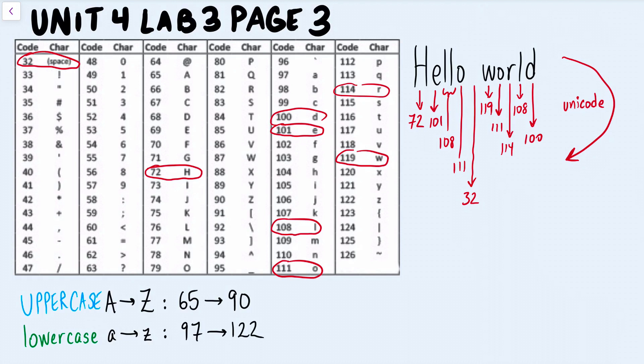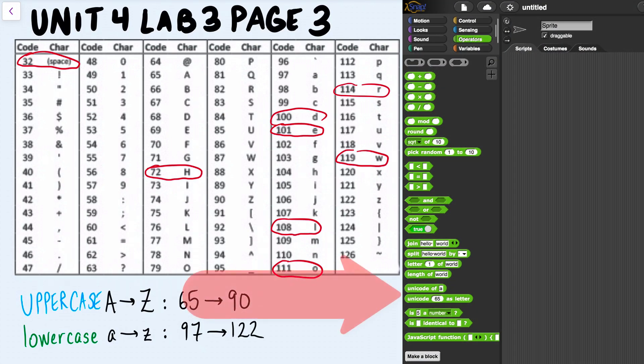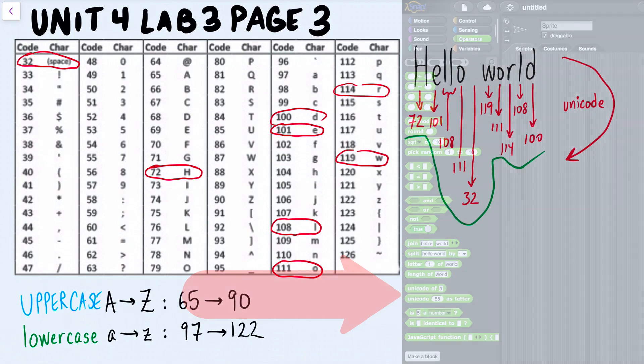So these are my Unicode values. All of these that I've written down over here are my Unicode values for these letters. If I feed the computer 72, 101, 108, 108, 111, 32, it knows that it can write out, it can spell out hello with a space and then world. We're going to use blocks in Snap, the Unicode of block and the Unicode as letter blocks, to be able to go back and forth between Unicode and actual letters.